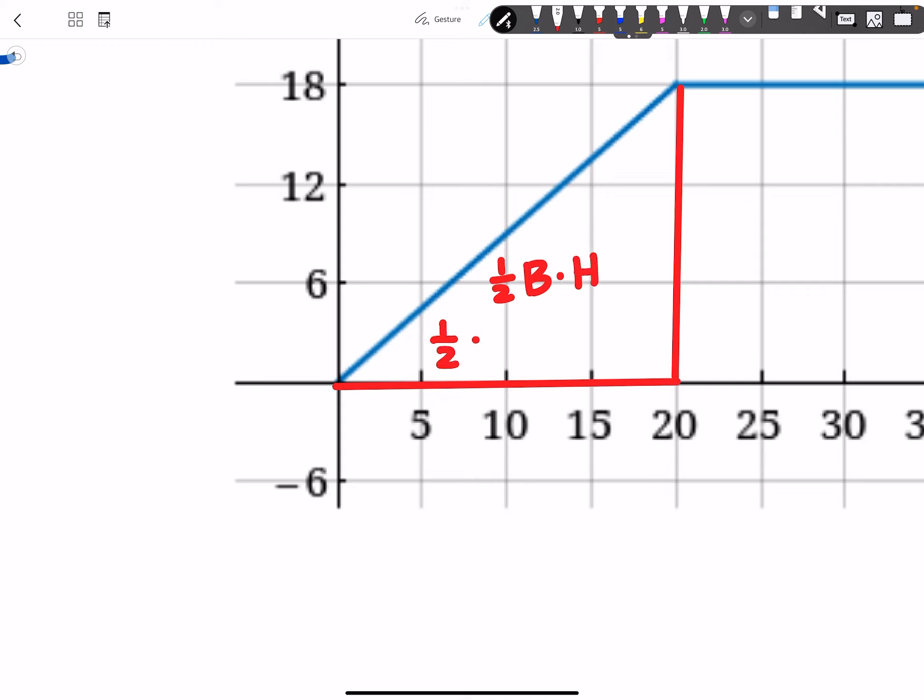So we know that's going to be half times the base times the perpendicular height. So this piece will be half times 20, and then the height is 18.